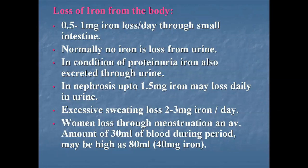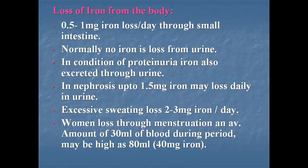Loss of iron from the body. Iron is a one-way element — the body uses iron very efficiently and very little iron is lost from the body of normal males. About 0.5 to 1 mg of iron is lost per day through the small intestine. Practically no iron is present in urine because iron in plasma is tightly bound with a protein called transferrin, which being a protein is normally not filtered by the renal glomeruli.